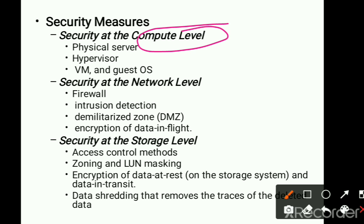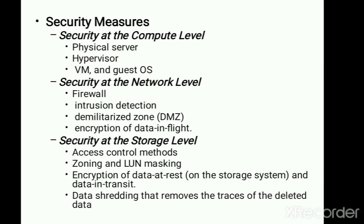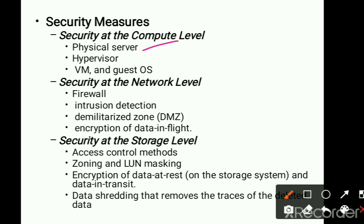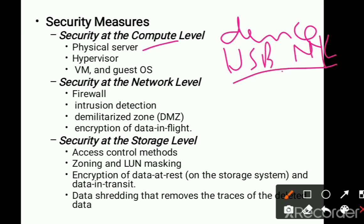At the compute level there are three main components: the first is the physical server, the second is the hypervisor, and the third is the VM and guest operating system. For the physical server, we have to provide security in terms of authentication and authorization. Whenever we are connecting devices to the physical server, we have to make sure which devices are being used — for example, which USB ports and network interface cards are in use.